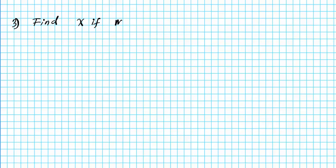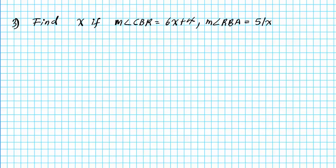Now let's take a look at question three. This is slightly more involved — we are going to be applying the Angle Addition Postulate to an algebraic equation involving multiple steps. We are to find x if the measure of angle CBR is equal to the expression 6x plus 4, the measure of angle RBA is equal to 51x plus 3, and the measure of angle CBA is equal to 178 degrees.